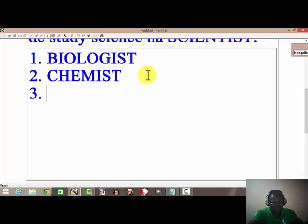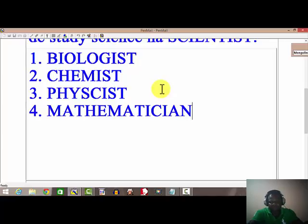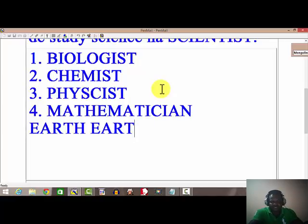A person who studied physics is called a physicist. What about mathematics? A mathematician. And a person who studied science is called a scientist.